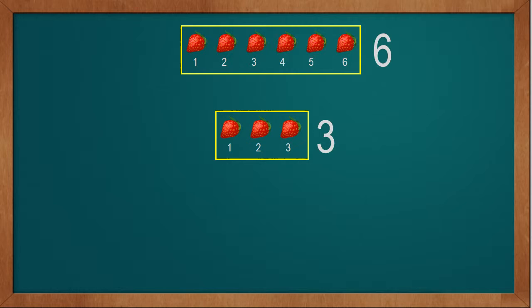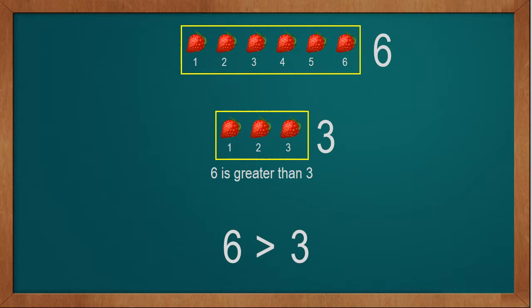Now we will compare 6 strawberries with 3 strawberries. Here we see that the quantity of 6 strawberries is more than the quantity of 3 strawberries. This way we find out 6 is greater than 3. We will write it as: 6 greater-than sign 3.